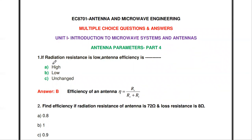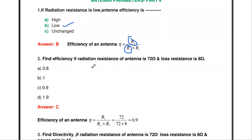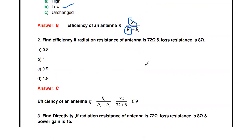The first question: if the radiation resistance is low, the antenna efficiency is dash. The relation between radiation resistance and antenna efficiency is: efficiency η = Rr / (Rr + Rl). So if the radiation resistance Rr decreases, the antenna efficiency is low. The answer is low.